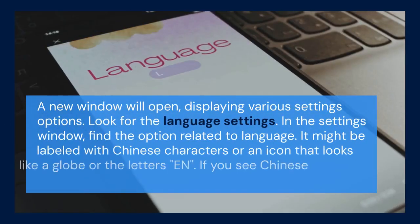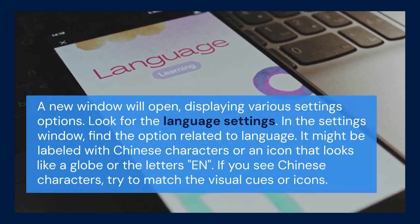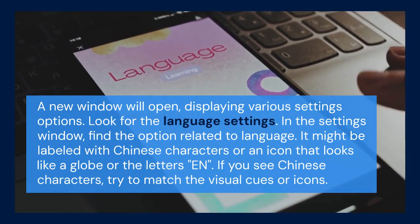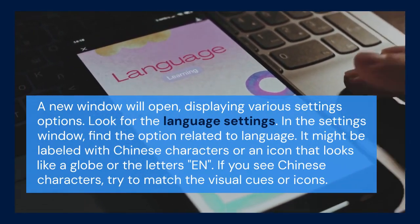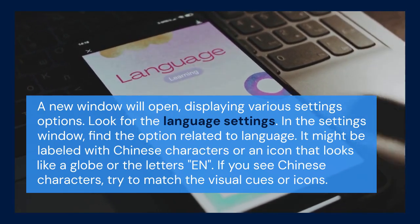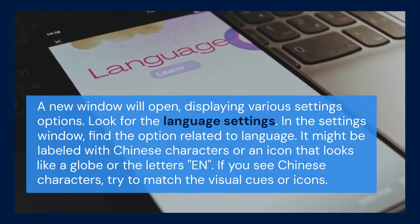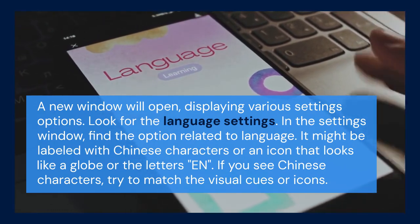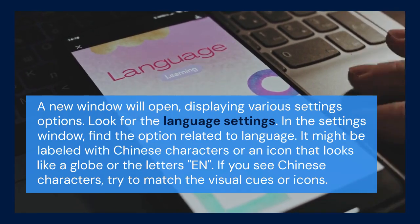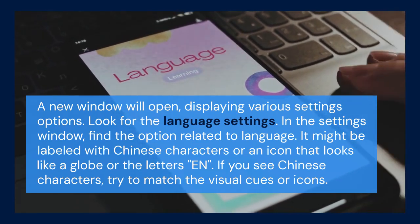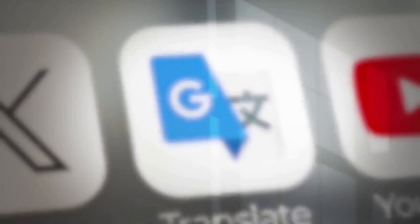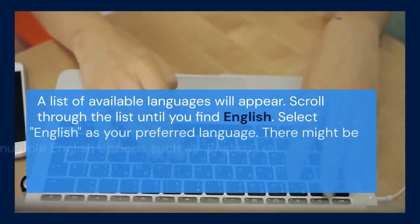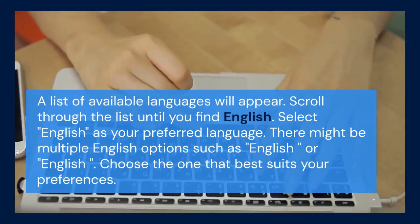A new window will open, displaying various settings options. Look for the language settings. In the settings window, find the option related to language. It might be labeled with Chinese characters or an icon that looks like a globe or the letters EN. If you see Chinese characters, try to match the visual cues or icons. Once you find the language settings, click on it. A list of available languages will appear.